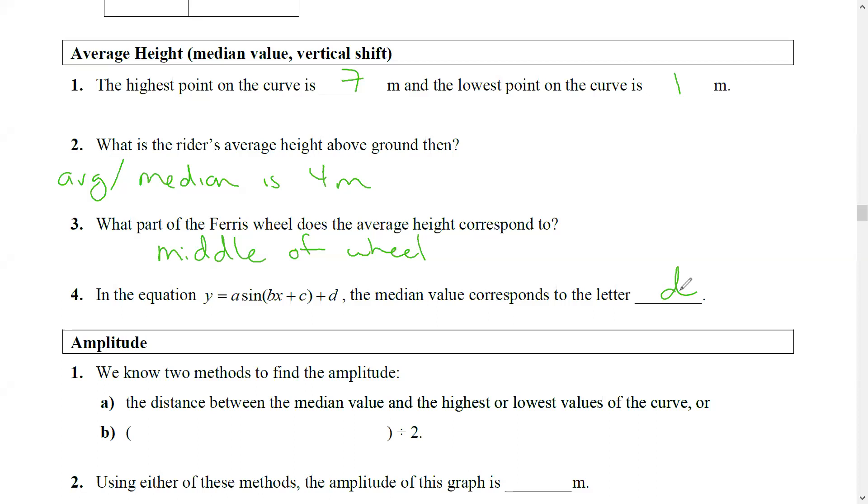Okay friends, you should have tried this first piece here on average height. It says the highest point is seven and the lowest point is one - that's easy, we can read that off the table. So number two, what is the rider's average height? Well, the other way to think of average is median, so it's halfway between seven and one. If you really wanted to use a formula, remember that's max plus min divided by two - that's four. The more important part is what part of the Ferris wheel does the average height correspond to? It's the middle of the wheel, sometimes they describe that as the hub of the wheel. And what is the median value correspond to? It's a.